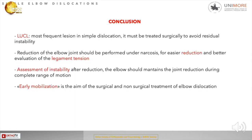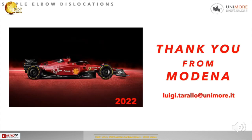In conclusion, the lateral ulnar collateral ligament is the most frequently injured structure in simple elbow dislocation and may require surgical repair to avoid residual instability. Reduction should be performed under anesthesia for easier reduction and better evaluation of ligament tension. Assessment of instability after reduction is essential, and the elbow should maintain joint reduction through a complete range of motion. Early mobilization is the goal of both surgical and non-surgical treatment. Thank you for your attention.